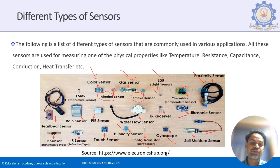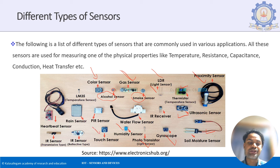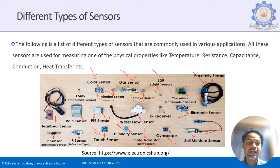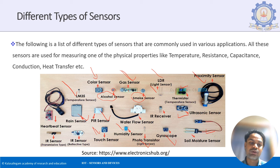Soil moisture sensor tells how much moisture is in the soil, useful for irrigation. Gyroscope tells the orientation of a device, used in mobile phones for gaming. Phototransistor is another form of LDR for measuring light intensity. Humidity sensor measures temperature and humidity. Touch sensor can act as a simple switch. Proximity infrared sensor detects objects within a radius. LM35 measures temperature only. DHT measures humidity and temperature.